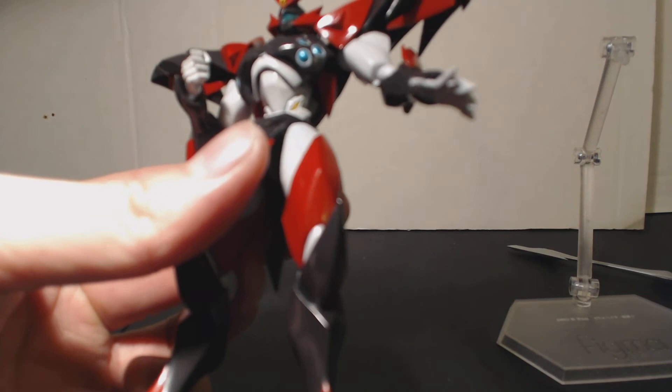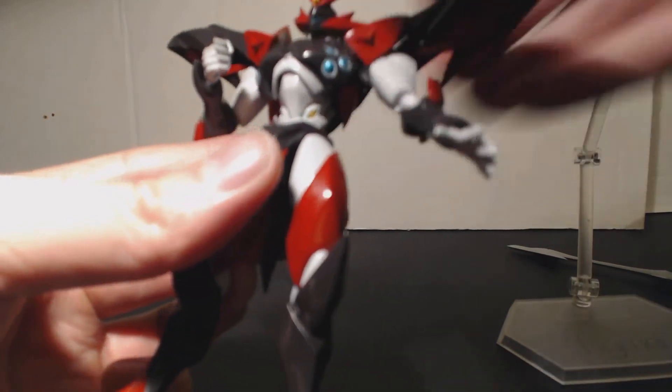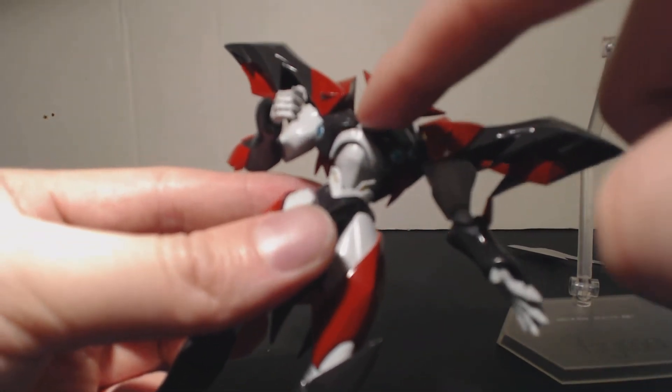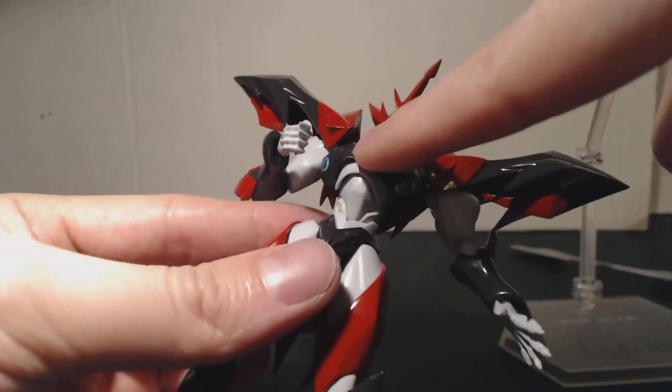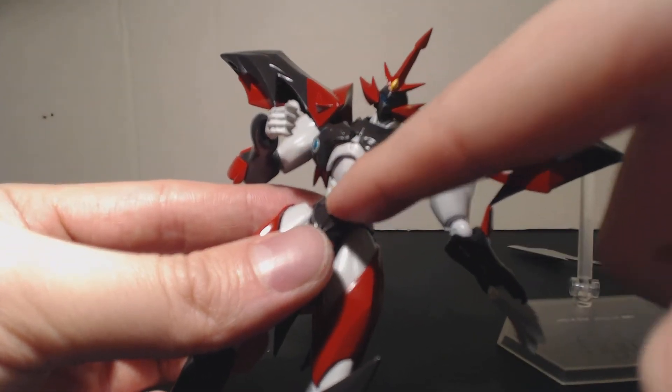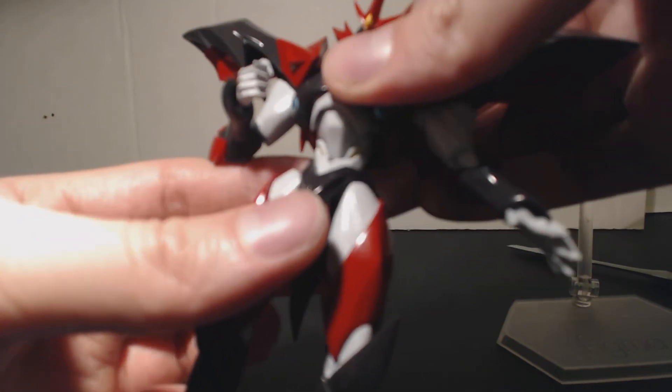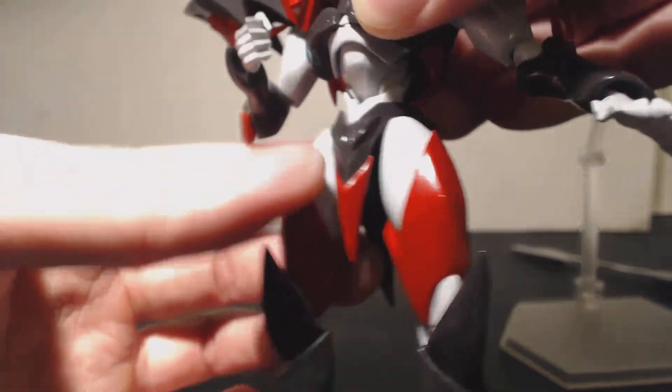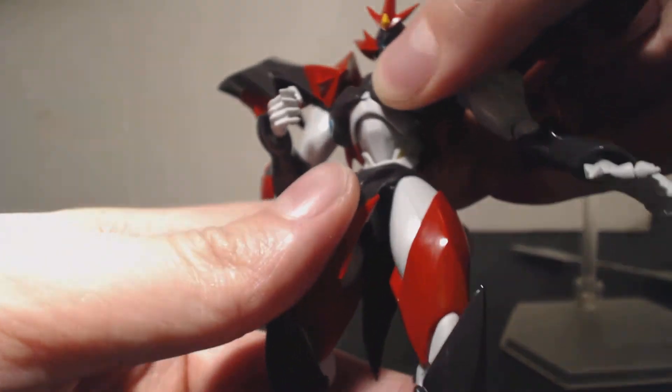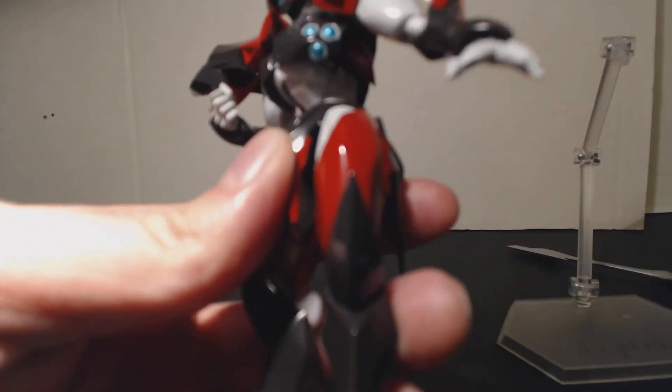The torso. Torso is not as articulated as Tekkaman Blade. Tekkaman Blade has two points of articulation for the Figma figure, one point is up here and another one on the bottom here. For Tekkaman Evo, I noticed that you're not getting any movement on the top piece, but rather you're getting most of your movement on the lower pivot point.